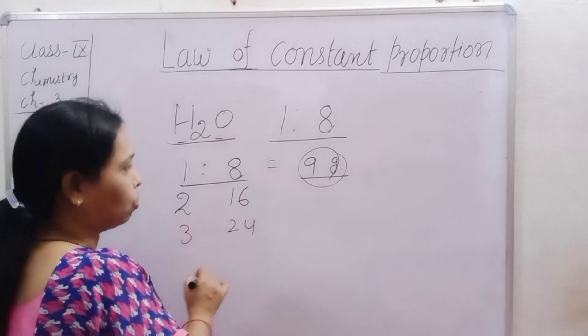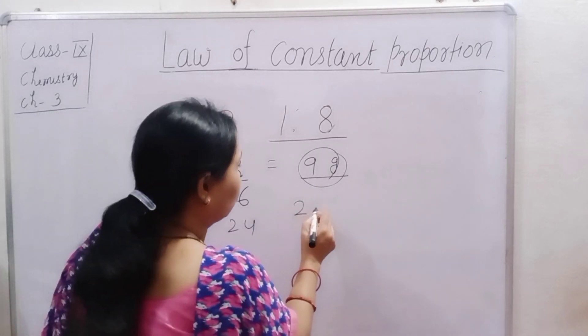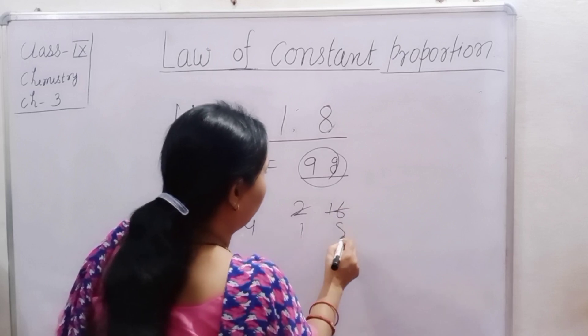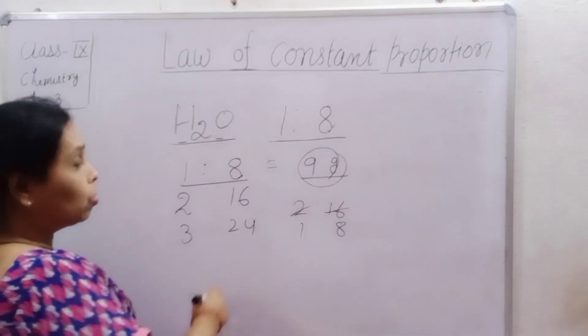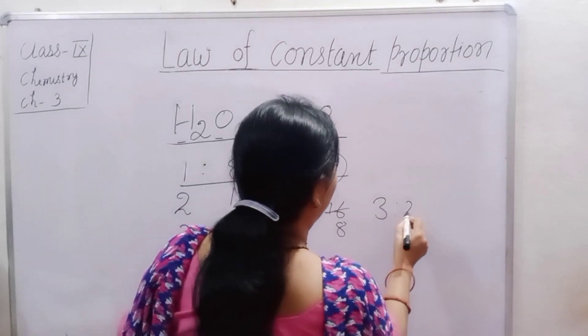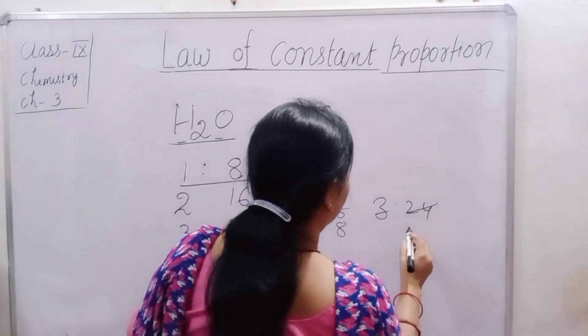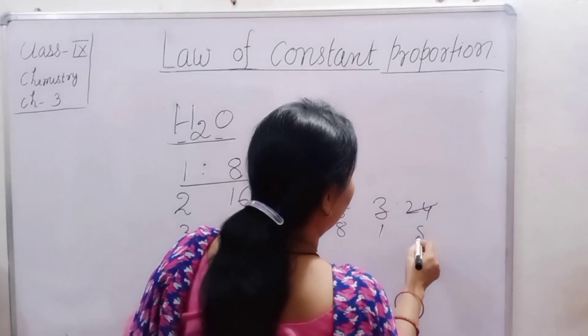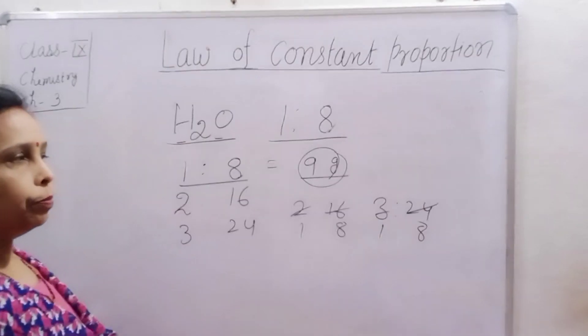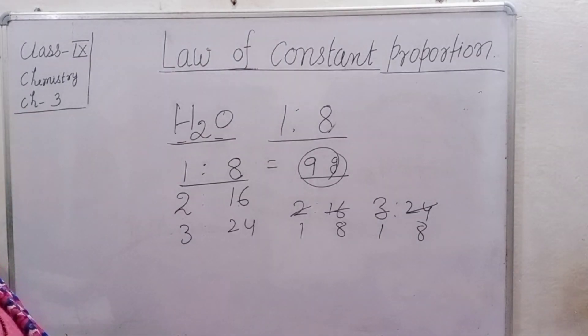2 and sixteen ko. To kya abonu hoota hai? 2 and sixteen mein? One or eight. Simplify ho gya. Three, twenty-four. Kitna ho gya? One is to eight.